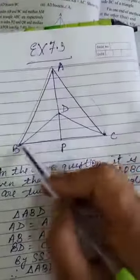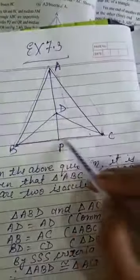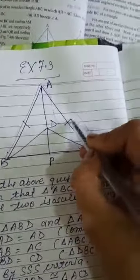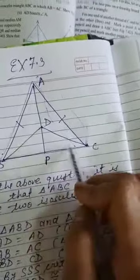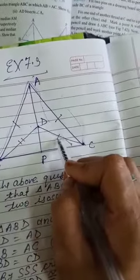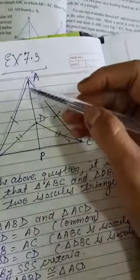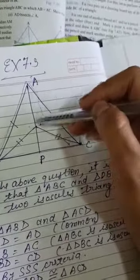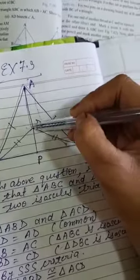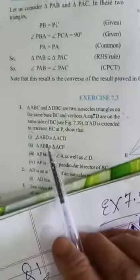Let us see the figure first. It is given that triangle ABC is an isosceles triangle, which means AB equal to AC. And triangle DBC is also an isosceles triangle, which means DB equal to DC. When AD is extended, it meets BC at point P.